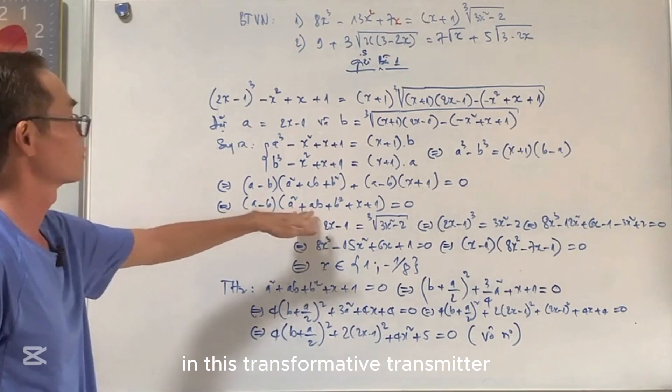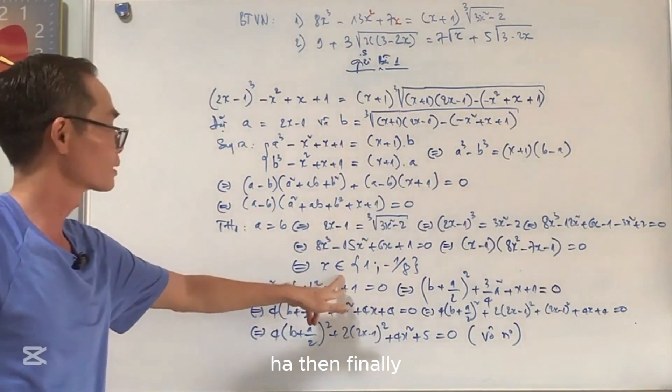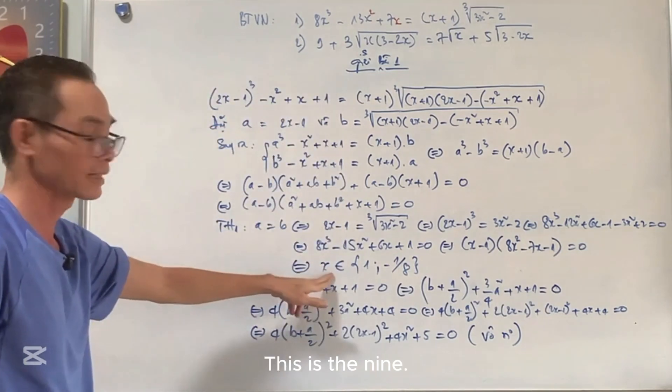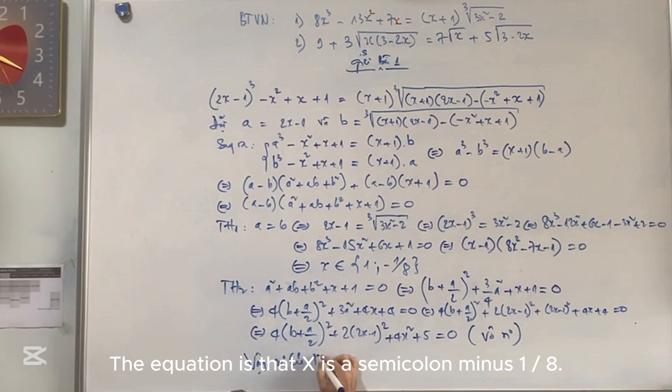The conclusion is that this equation has no experience in the second factor. In this transformative transmitter, no experience in the first factor. I have harvested this experience. Then finally, the solution of the whole equation is x equals 1 or minus 1/8. So the solution set of the equation is x in the set {1, -1/8}.